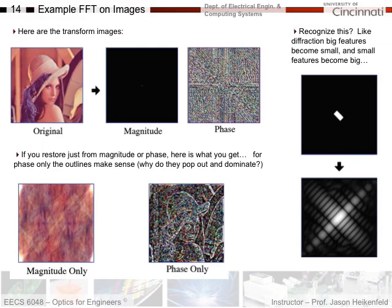Let's look at something a little more familiar. Here's a rectangular slit — you run it through the software, and here's the Fourier transform. Beautiful — you can see diffraction right there. The diffraction is more spread out in one direction because the slit is narrower, and less spread out in the other direction where it's longer. You can see how the Fourier transform would also predict diffraction.